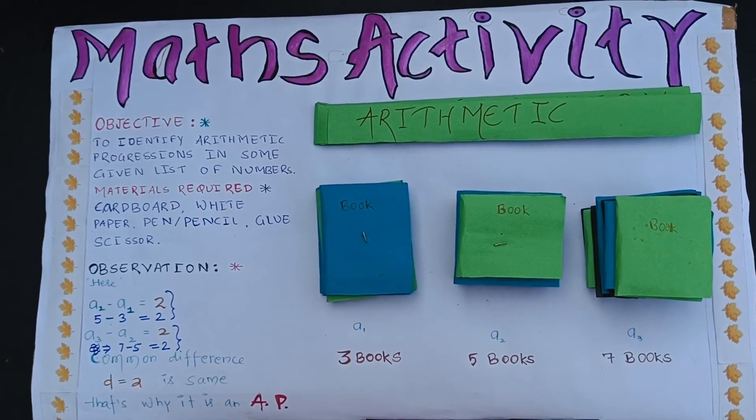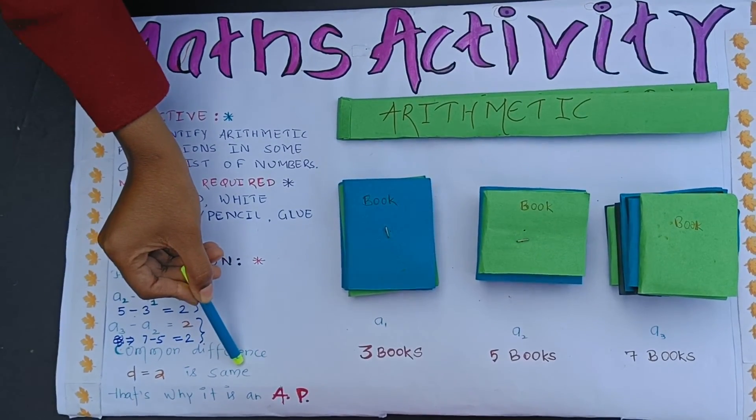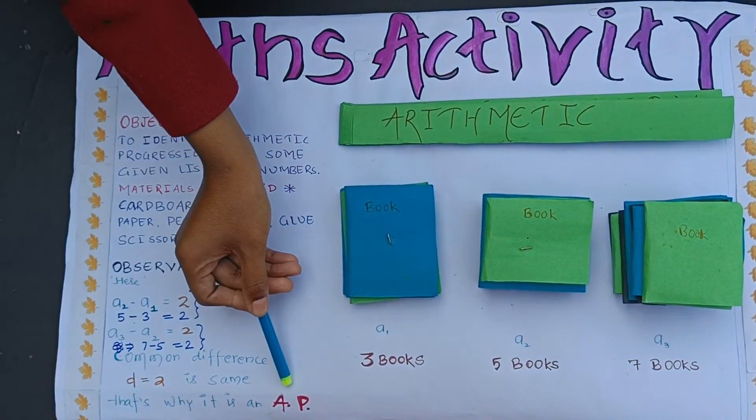Hence, the common difference is same in given list of numbers. That's why the given list of numbers are in arithmetic progression. Thank you.